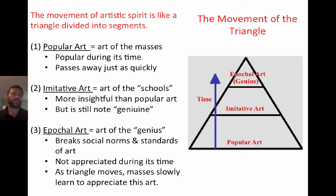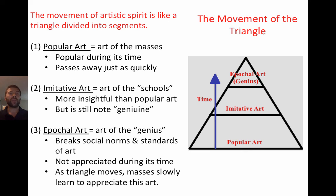So we have that breakdown: popular art is the art of the masses; imitative art is the art of the schools — the academic art that doesn't strike any genuine note; and epical art is the art of the genius — the art that breaks from the norms and standards of art. Generally, this type of art is not going to be appreciated during its time, because it takes time to acquire a certain taste. With genius and epical art, you have new sounds, new types of pictures, new images, new ways of doing art — and when you first encounter that, like a new food or a new song, it just takes some time to get used to it because it's so new.